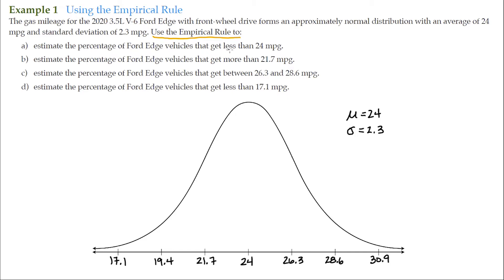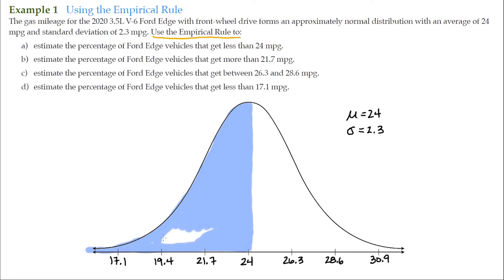Letter A: estimate the percentage of Ford Edge vehicles that get less than 24 miles per gallon. Here's 24 miles per gallon right here, and this is the area in question. As you can see, that's half the graph — so this is 50%. The answer is 50%.